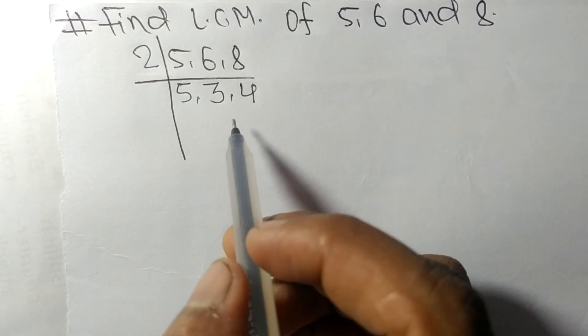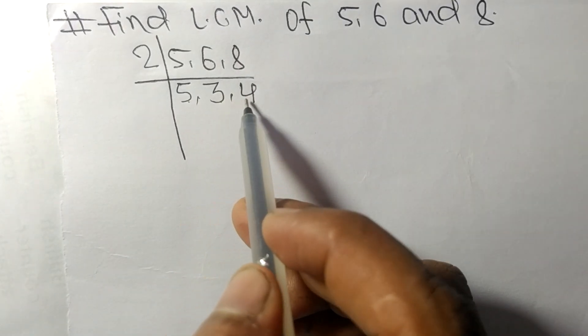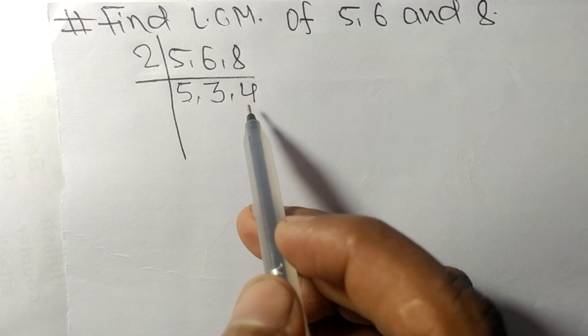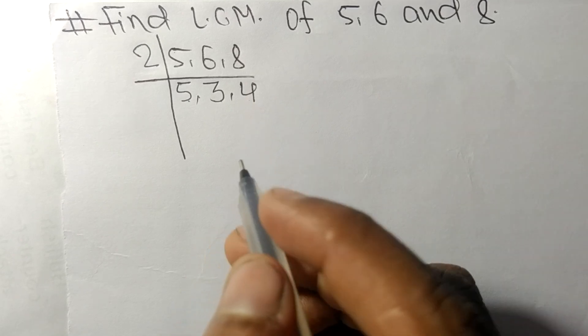Now we have 5, 3, and 4, which are not exactly divisible by the same number.